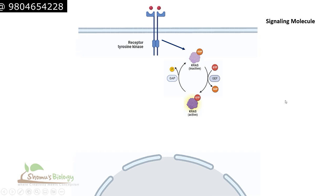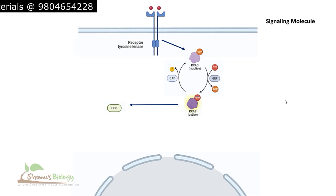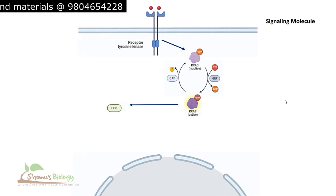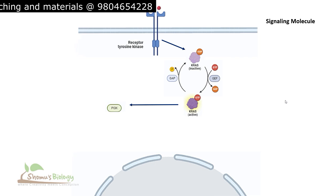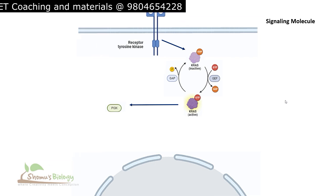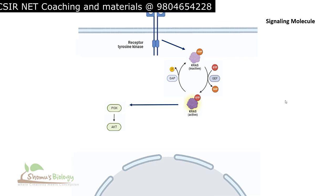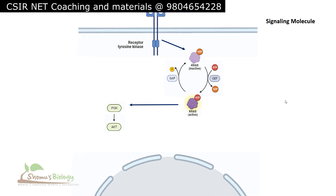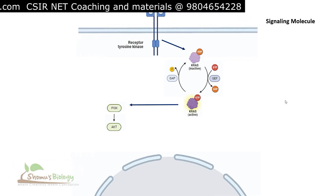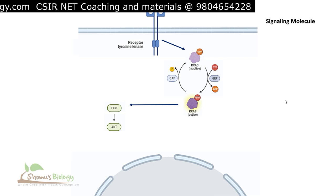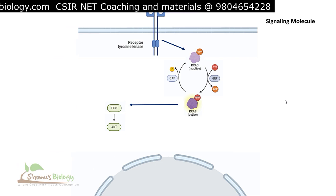This active KRAS associated with GTP is further going to activate PI3K — phosphatidylinositol 3-kinase. This PI3K is going to activate AKT, the AKT kinase, also called AK strain transforming type of kinase.